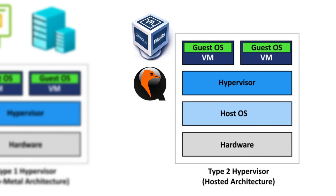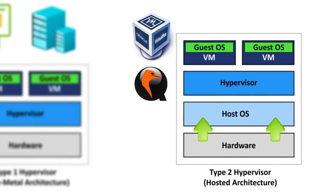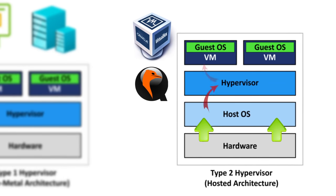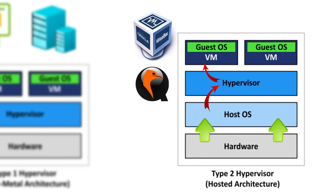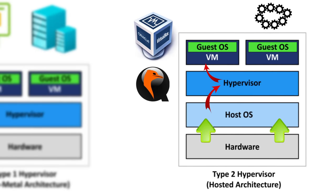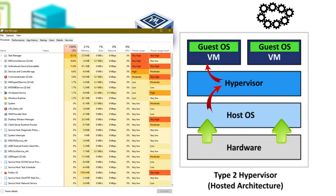Type 2 hypervisors are by design slower than type 1 hypervisors, because not only is the operating system handling the distribution of resources, but the guest is also slowed down by the host if a lot of processes are running. They are also considered less stable because of that, because if the host crashes then so are the guests.